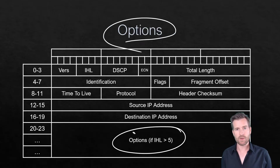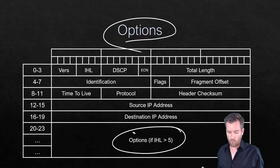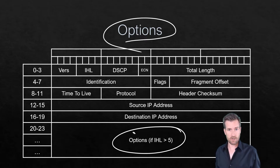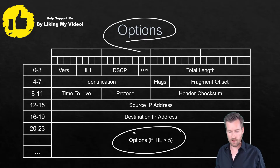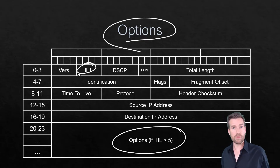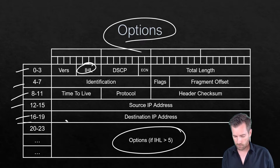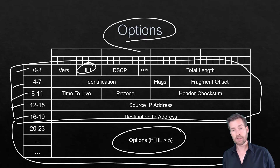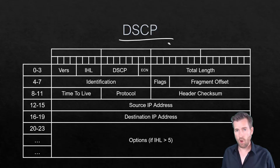The options field was designed to add additional functionality to IP version 4. However, it's not commonly used — in fact, many devices will drop packets that include options for security purposes. That's why the IHL typically remains at 5, indicating only the standard five rows are present and no options are included.